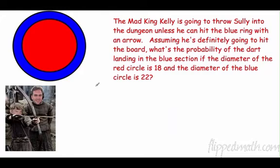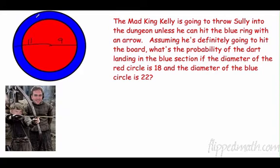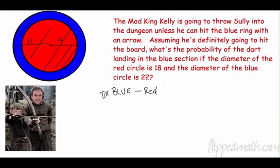Now for geometric probability: the mad king Kelly will throw me in the dungeon unless I hit the blue ring. The red circle has a diameter of 18, so its radius is 9. The large blue circle has a diameter of 22, so its radius is 11. The blue section we want to hit is the big blue circle minus the red circle.